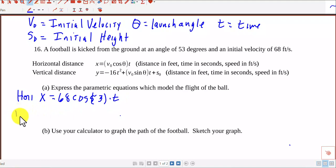And our vertical distance or how high it goes, y equals -16t² + 68 sin(53°) times t plus zero. You don't really need the plus zero.